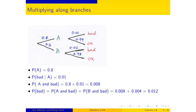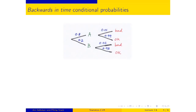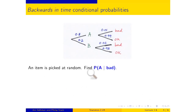But what if I pick a widget at random, look at it, and it's bad — and now I want somebody to blame? I ask: what is the chance that that bad thing came from machine A? An item is picked at random; I want the chance that it came from machine A given that it is bad. In other words, I want to go backwards in time — I tell you the result of the second stage and you give me chances for the first one.